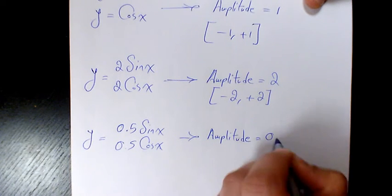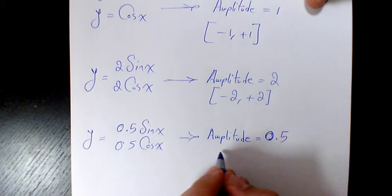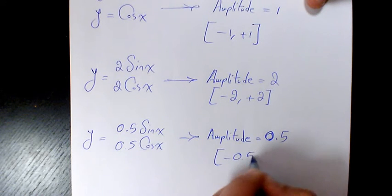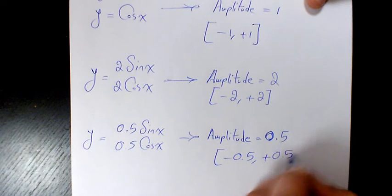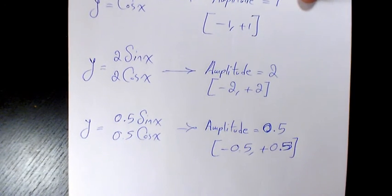It's going to change from negative 0.5 to positive 0.5, so that's basically the vertical compression by factor of 0.5.